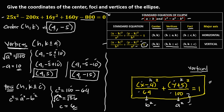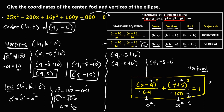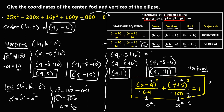Now solving for the foci: h is 4, k is negative 5, and c is 6. The two foci are (4, negative 5 plus 6) and (4, negative 5 minus 6). Simplifying: negative 5 plus 6 is positive 1, and negative 5 minus 6 is negative 11. So the coordinates of the foci are (4, 1) and (4, negative 11).